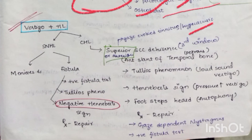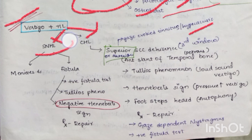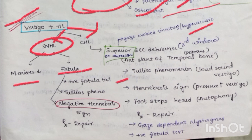If a patient presents with vertigo and hearing loss, determine whether it is sensorineural or conductive hearing loss. If sensorineural hearing loss, think about Meniere's disease and perilymphatic fistula — in fistula, positive fistula test, Tullio phenomenon, and negative Hennebert sign are seen. Treatment is surgical repair.